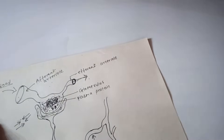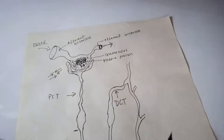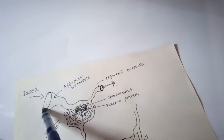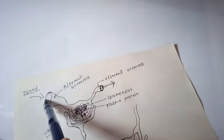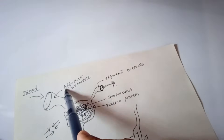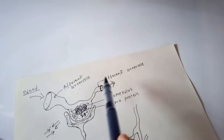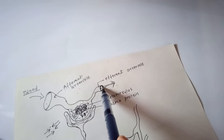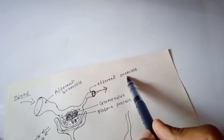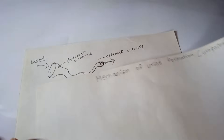Let's move towards the figure. This is a rough figure. In this figure, I will show you the same diameter of the tube. This tube is called the Efferent Arteriole.